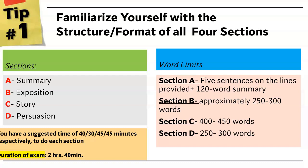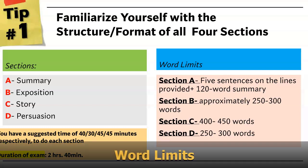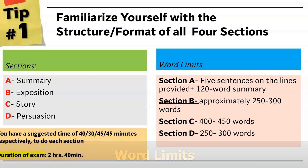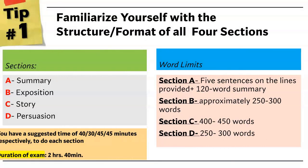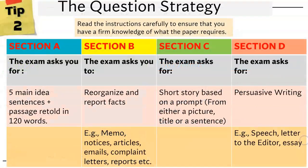Word limits are very important. In Section A, you're expected to compose five sentences on the lines provided, plus a 120-word summary. Those five sentences are the five main ideas extracted from the original piece. Section B: approximately 250 to 300 words. Bear in mind that you aren't normally given the number of words to be used. Section C: 400 to 450 words. Section D: 250 to 300 words.